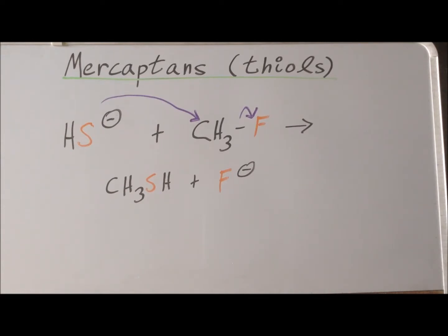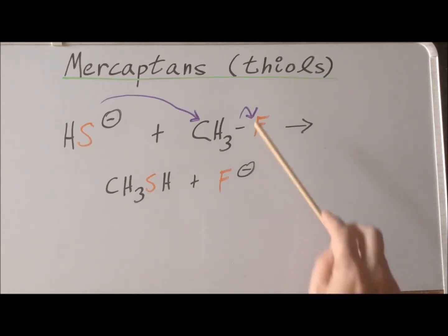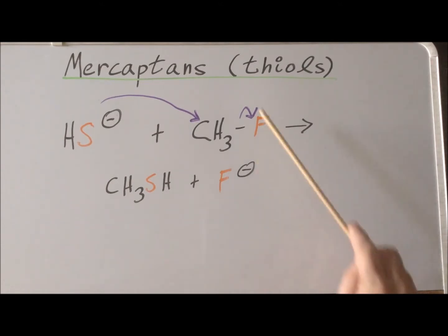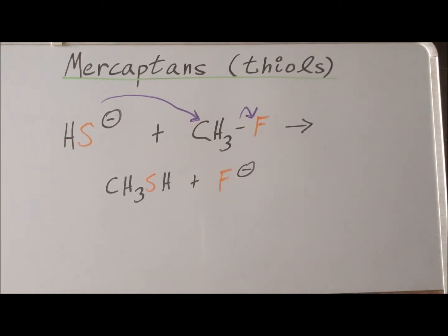In Table 1, we show the computed energies of activation for the various halomethanes. In every single case, the energy of activation for the fluoro compound is much higher than for the chloro compound, which is higher than for the bromo compound. This computationally demonstrates what we already know: fluoride is a very poor leaving group, chlorine is a pretty good leaving group, and bromine is an even better leaving group. We have not computed the examples with iodine, but iodide is the best of all the leaving groups for these examples.